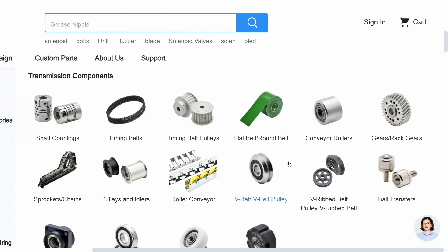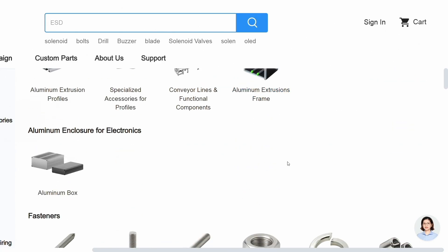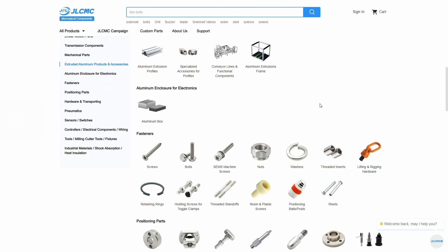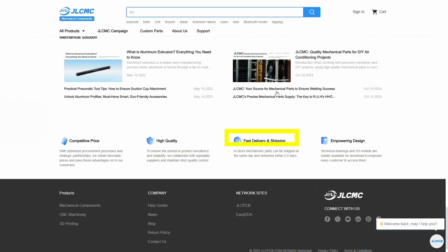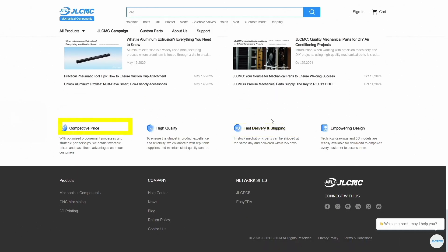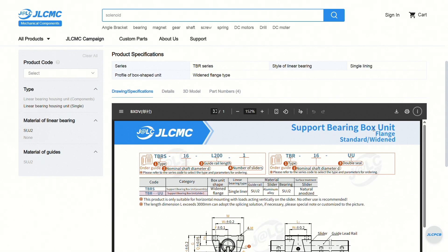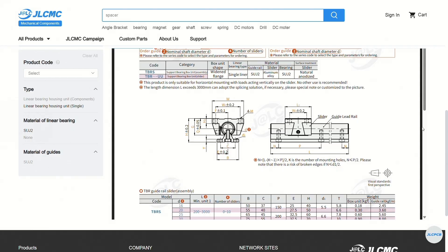JLCMC is the go-to source for makers, engineers, and manufacturers worldwide. Need something fast? Over 600,000 parts are in stock and ready to ship in 24 hours.